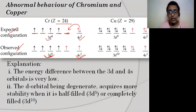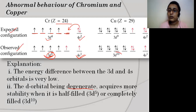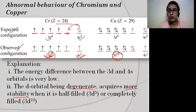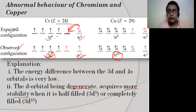So when the configuration becomes D5 it is half-filled, or D10 it is completely filled — those orbitals acquire some extra stability. That is why an electron jumps from the 4S orbital to the 3D orbital. This is only possible because the energy difference between the 3D orbital and 4S orbital is very low, which allows the electron to jump from 4S to 3D.